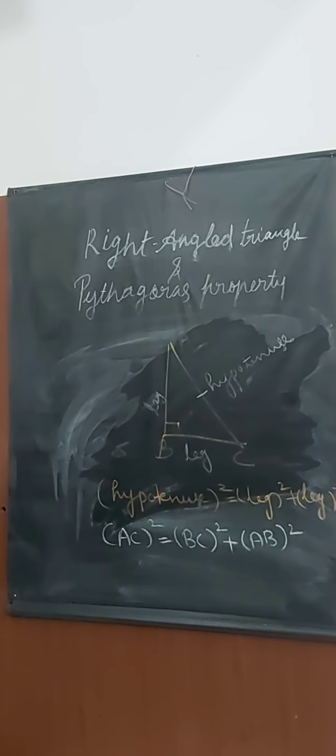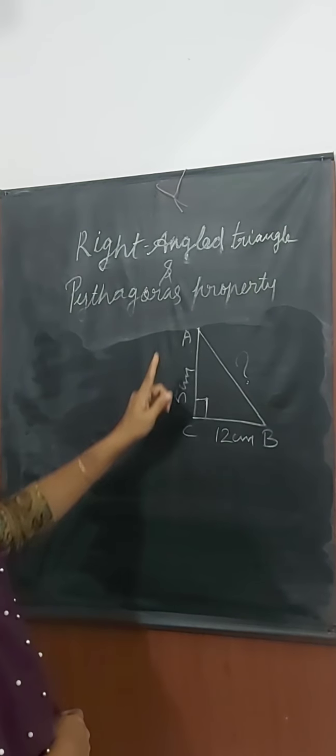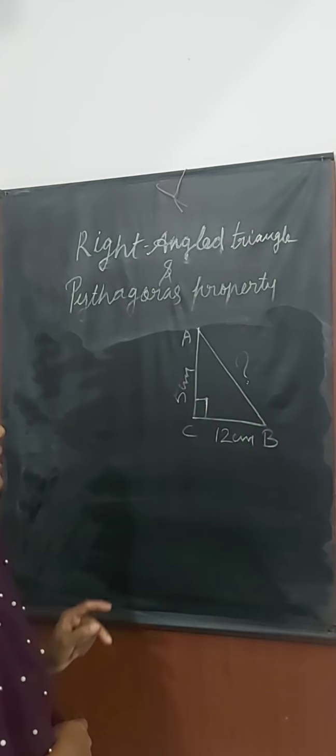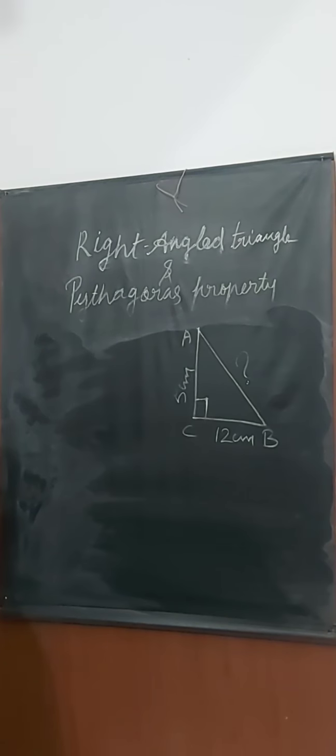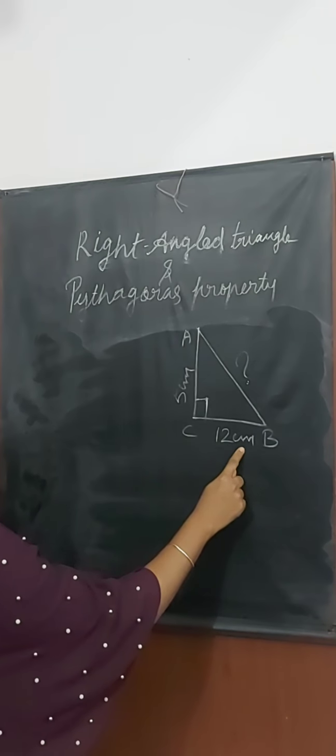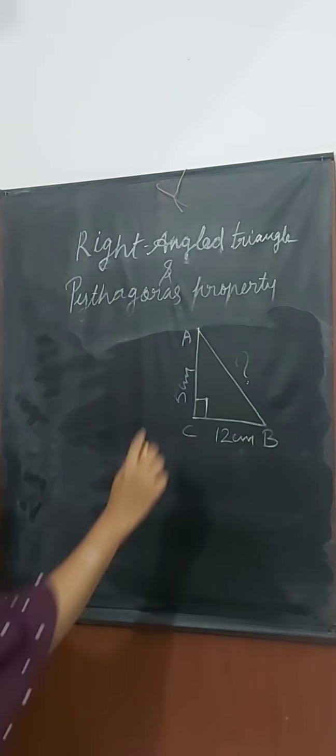Let's solve an exercise to better understand. Look at this figure. Triangle ABC is a right angle triangle because angle C is a right angle. BC equals 12 cm, AC equals 5 cm. Find the length of AB.